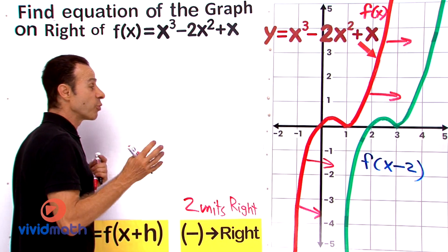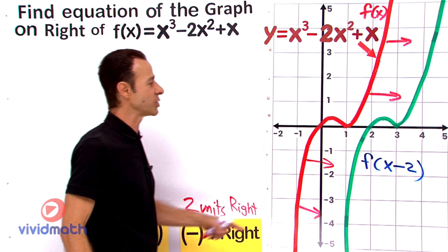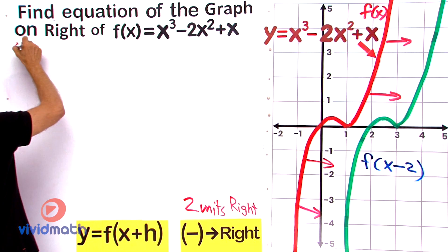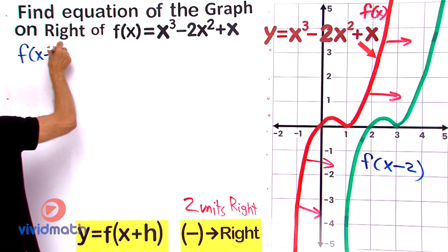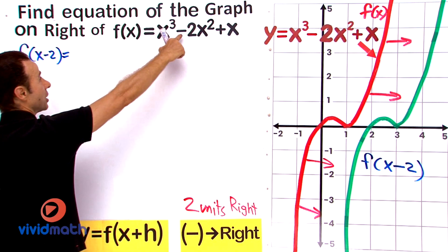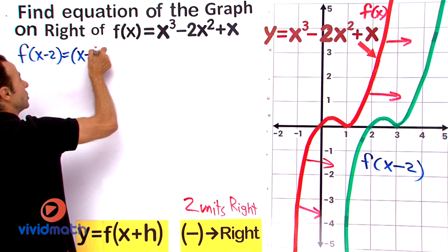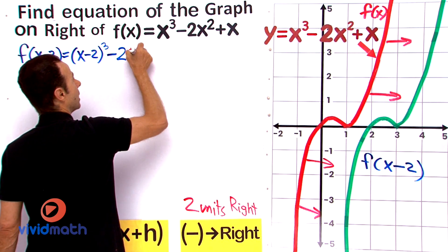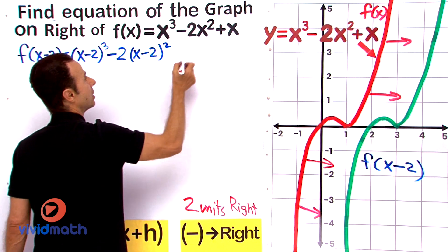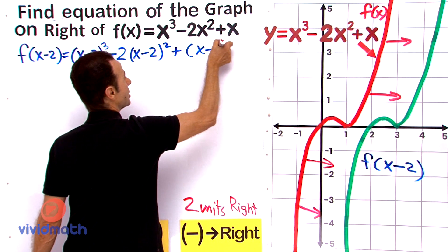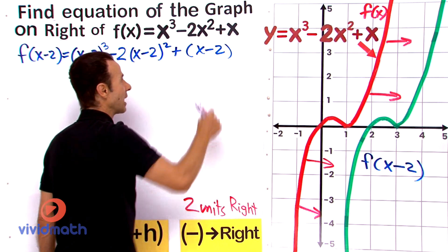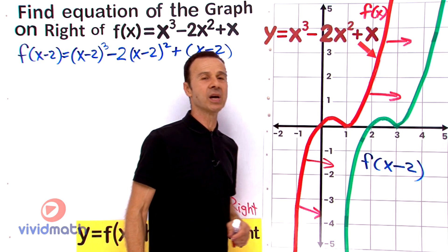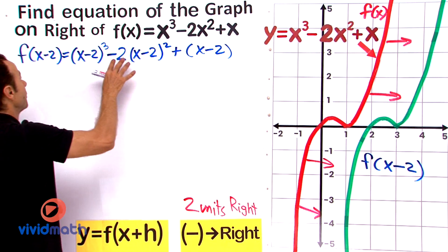Let's go ahead and substitute. Any time we see an x we're going to replace it with x minus 2. So f(x minus 2) equals (x minus 2) cubed, minus 2 times (x minus 2) squared, plus (x minus 2). All we did was replace every single x with x minus 2. Now we just simplify and that gives us the equation for the function on the right.